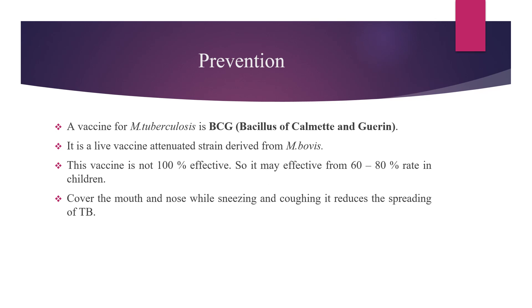Prevention. A vaccine for Mycobacterium tuberculosis is BCG — Bacillus of Calmette and Guérin. It is a live attenuated vaccine strain derived from Mycobacterium bovis. This vaccine is not 100% effective; it may be effective from 60 to 80% in children. If infected, people should cover the mouth and nose while sneezing and coughing, which reduces the spreading of TB.